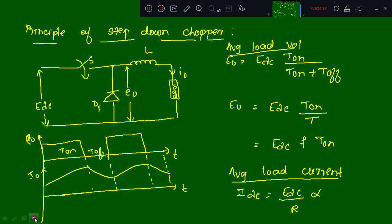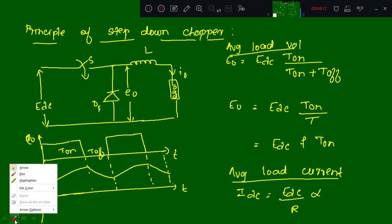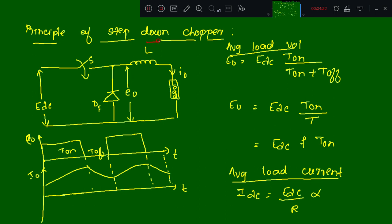Next we will take the step-down chopper. In the step-down chopper, the output voltage is less than the input voltage — this is the basic principle. In the step-down chopper, the switching device used can be an SCR (silicon controlled rectifier), a power BJT, or a power MOSFET. The output voltage is smaller than the input voltage.